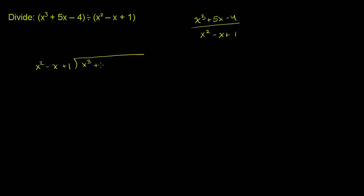So x to the third plus nothing to the x squared power plus 5x minus 4. We have a place for the third power, the second power, the first power, and the zeroth power. Now let's do a little bit of algebraic long division. Let's look at the highest degree term: x squared goes into x to the third how many times?